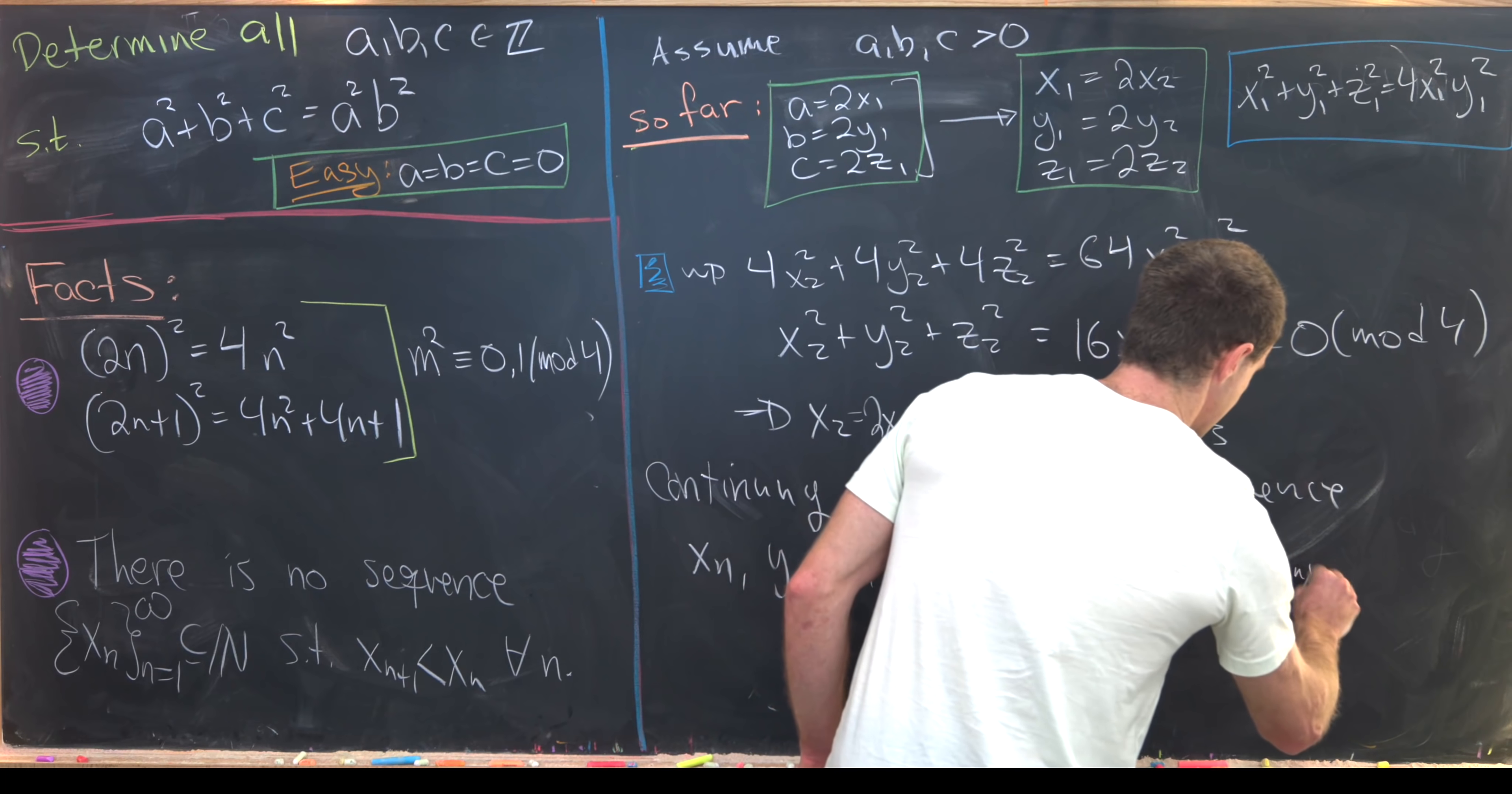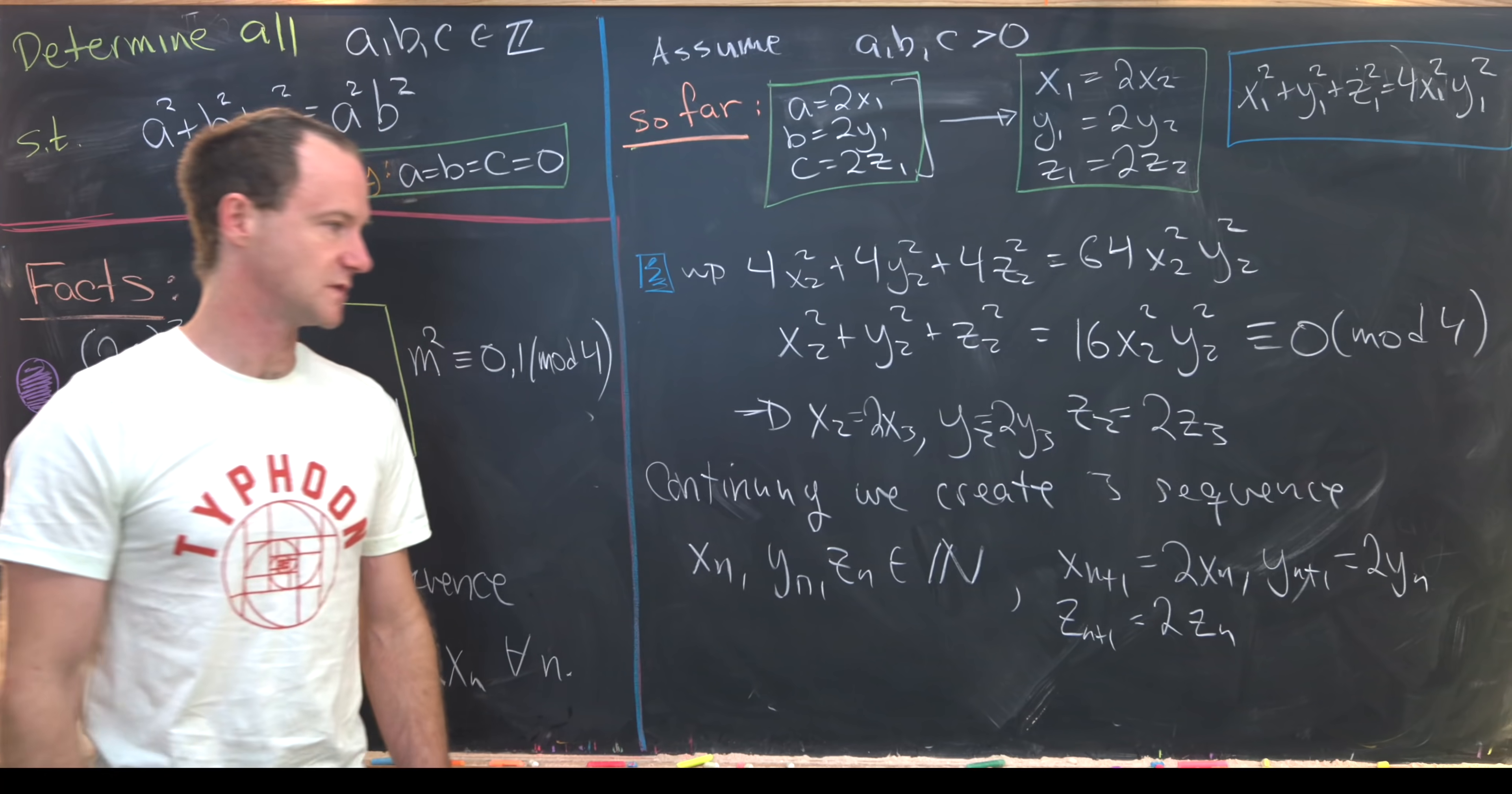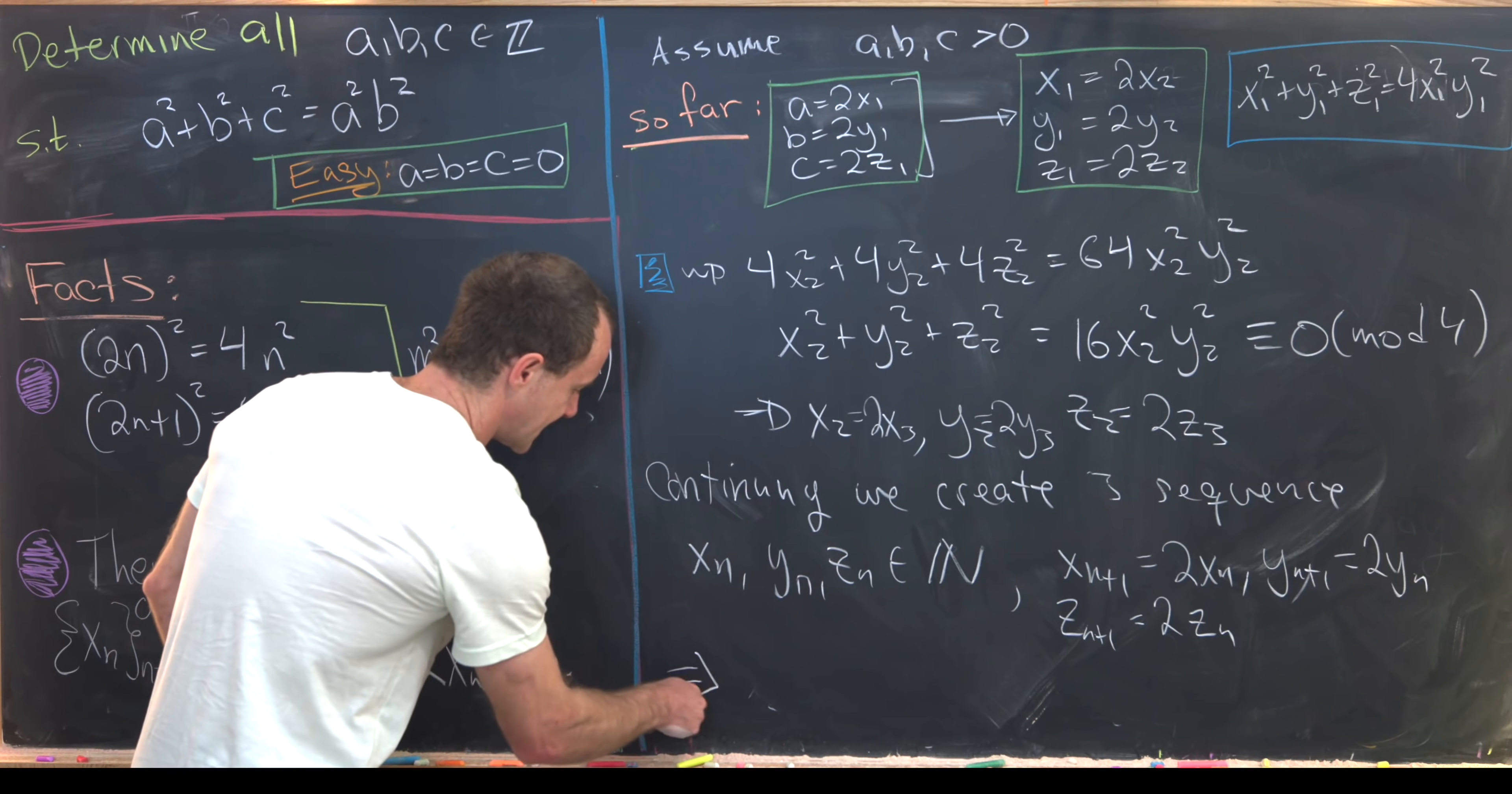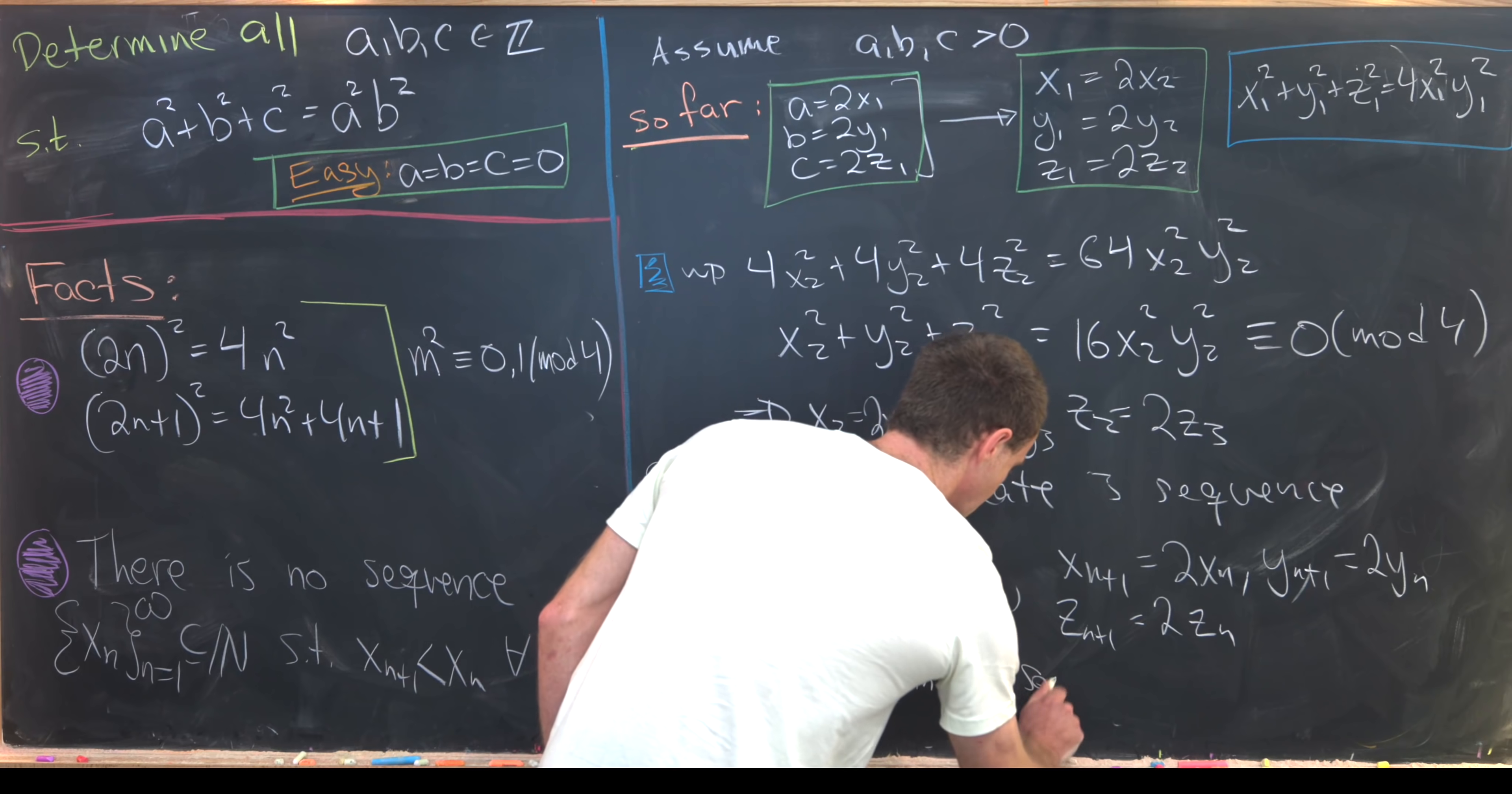yₙ₊₁ = 2yₙ, and finally, zₙ₊₁ = 2zₙ. But since xₙ₊₁ = 2xₙ, that tells us that we have an infinite sequence.